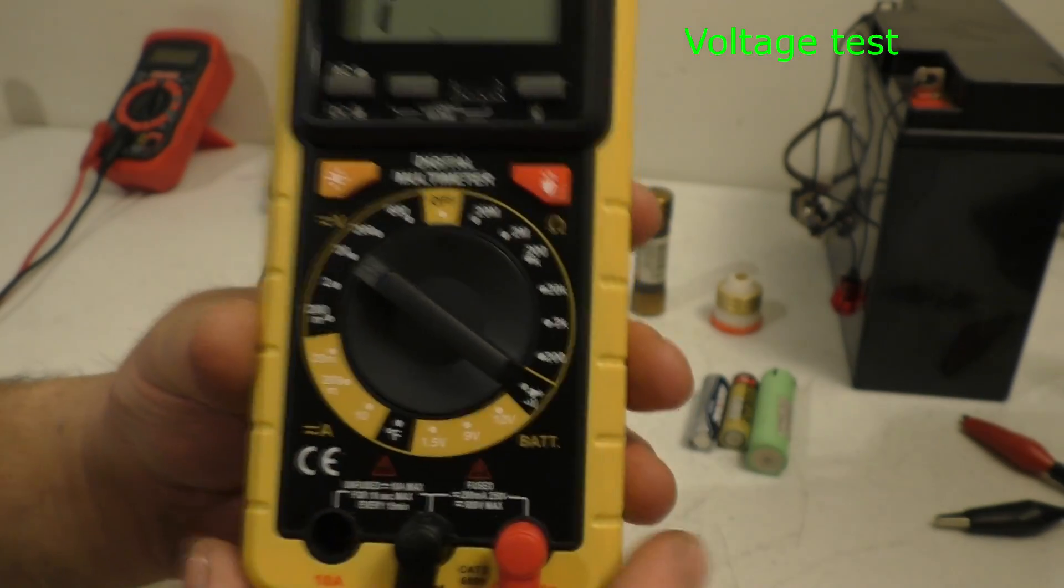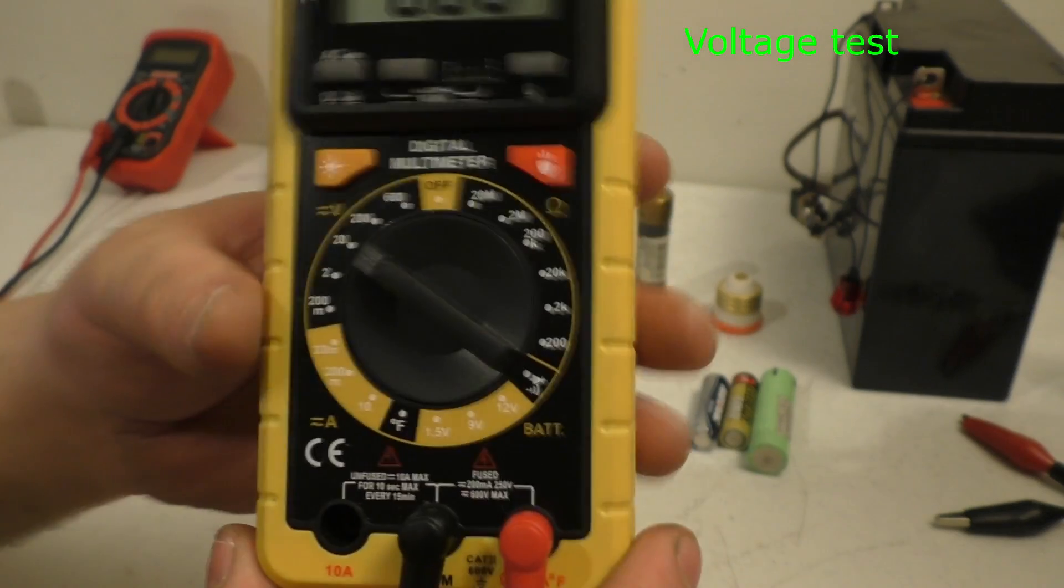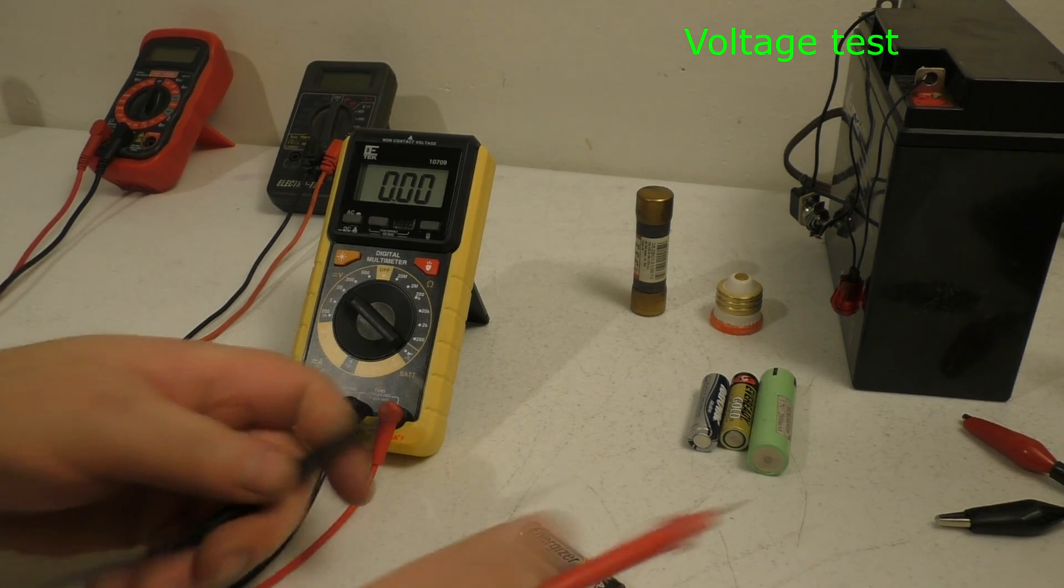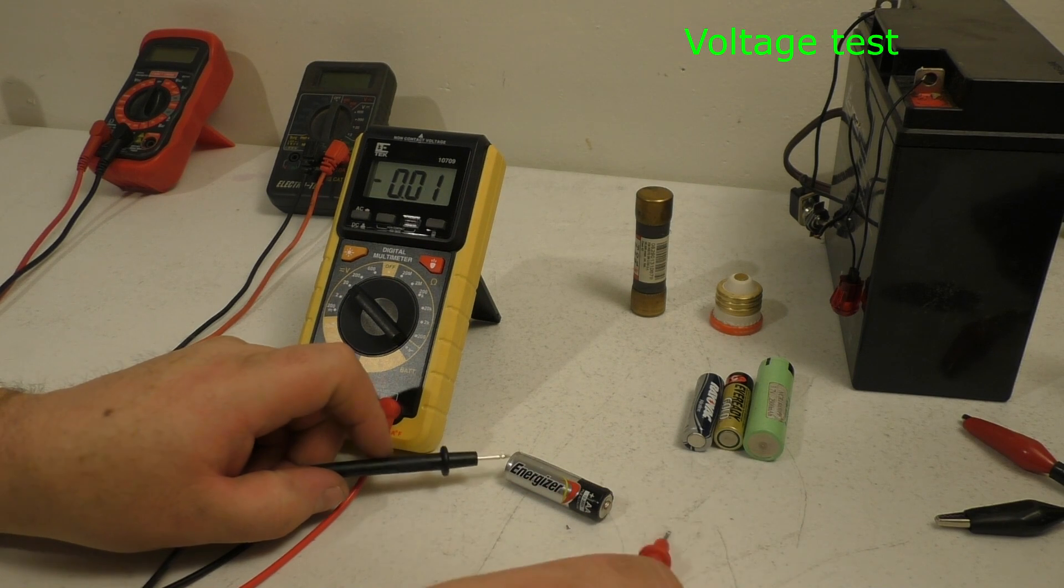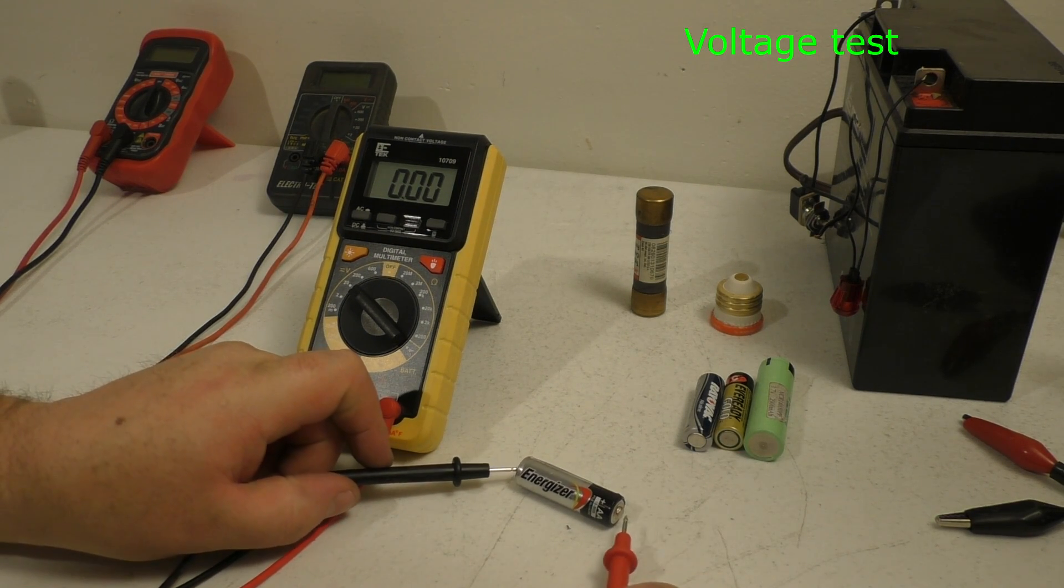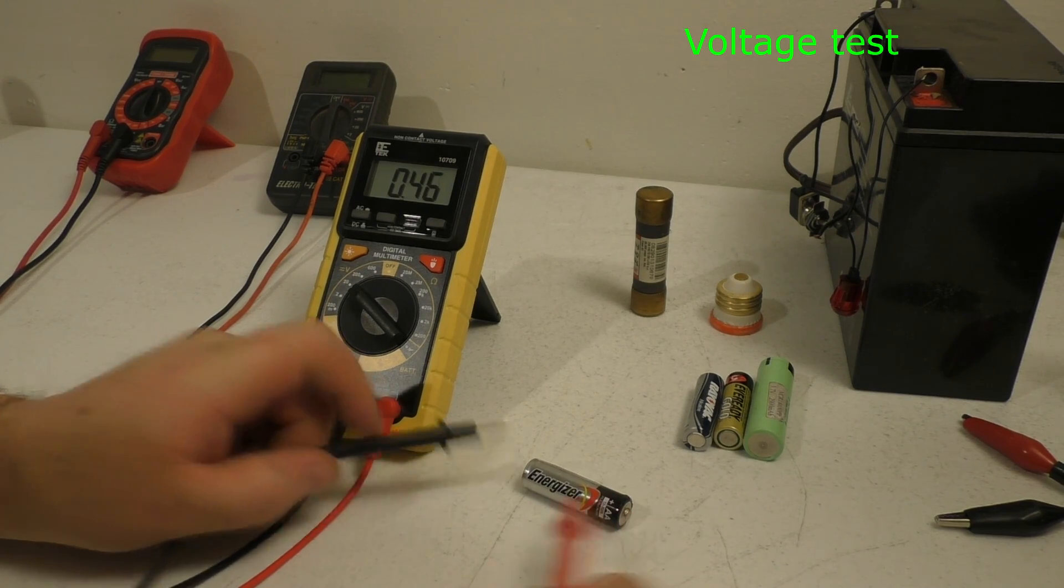So we'll go ahead and turn it to 20, knowing that we're going to be over, you know, say 1 volt. Black lead negative, positive lead is red. Just touch it, then you've got 1.31 volts.